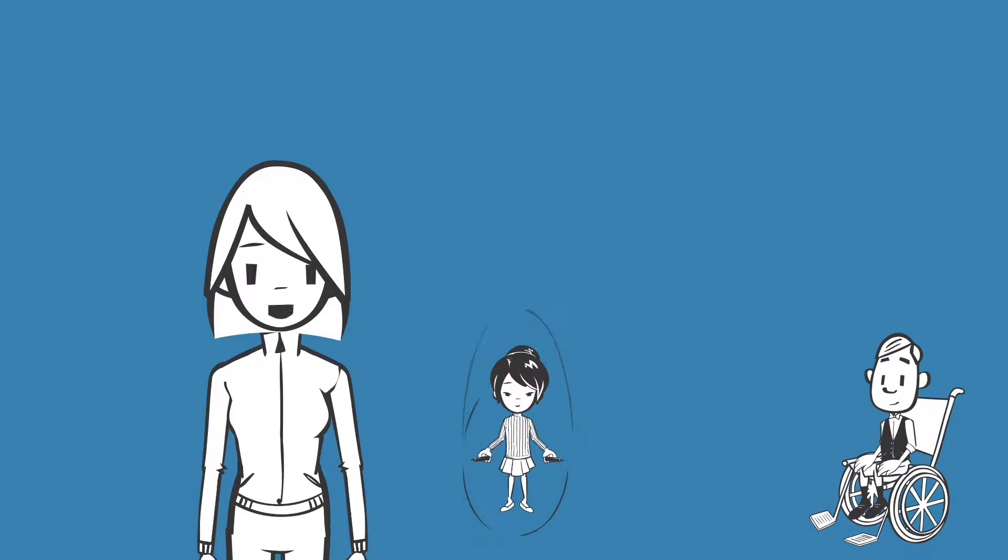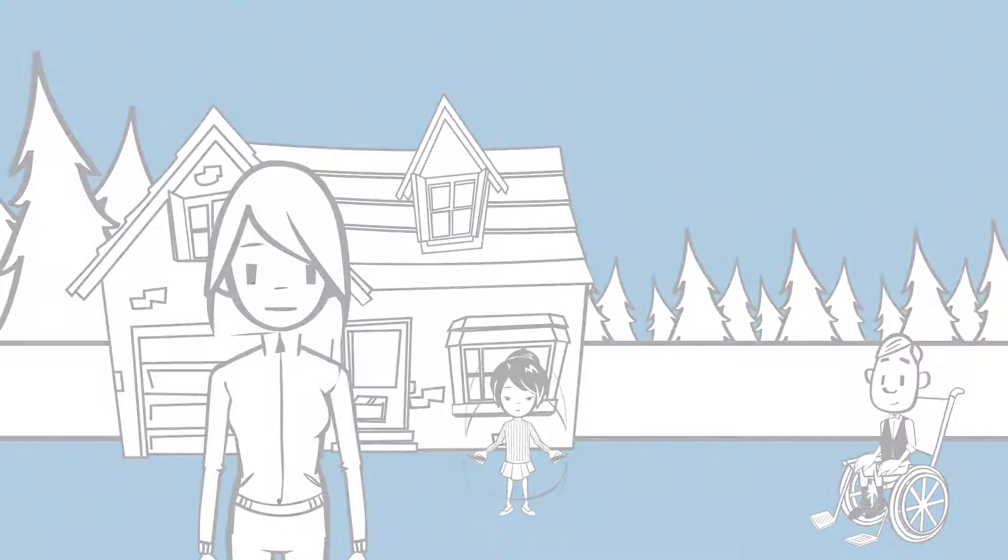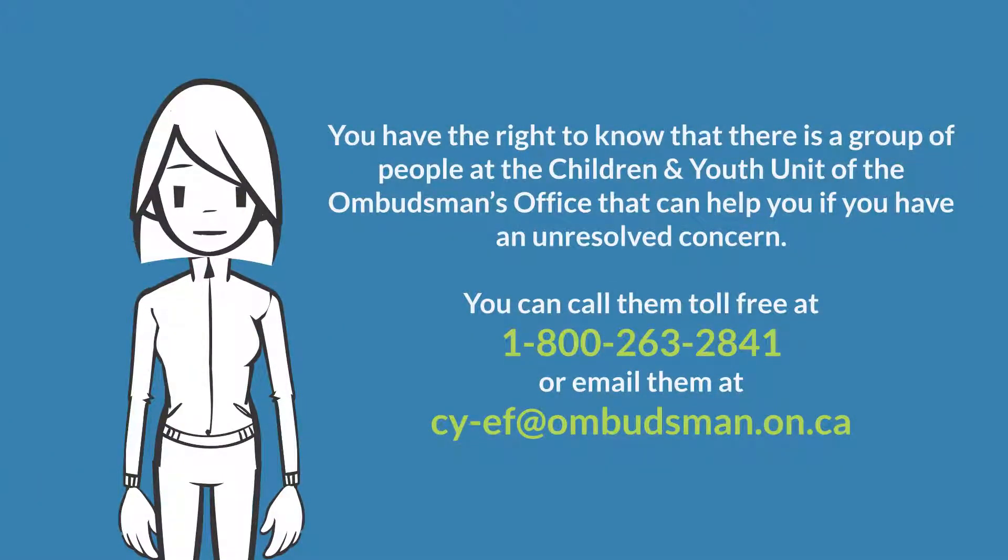You have the right to know that there is a group of people at the Children and Youth Unit of the Ombudsman Office that can help you if you have an unresolved concern. You can call them toll-free at 1-800-263-2841 or email them at cy-ef at ombudsman.on.ca.